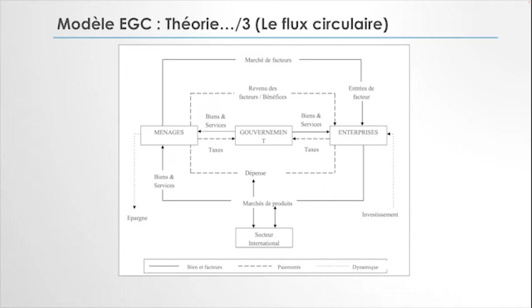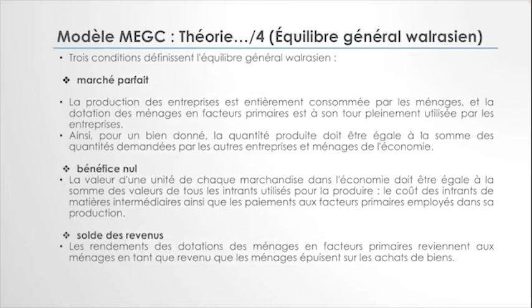Nous sommes dans une économie dynamique dans la mesure où il y a vraiment l'interaction avec l'international. Nous exportons, nous importons. Le secteur international a pour but soit d'apporter l'investissement nécessaire, soit de faire l'import-export. Nous sommes dans notre modèle d'équilibre général calculable mais en interaction avec l'extérieur. Les modèles d'équilibre walrasien définissent trois conditions : le marché parfait, où la production des entreprises est totalement consommée par les ménages, et la dotation des ménages en facteurs primaires est pleinement utilisée par les entreprises.